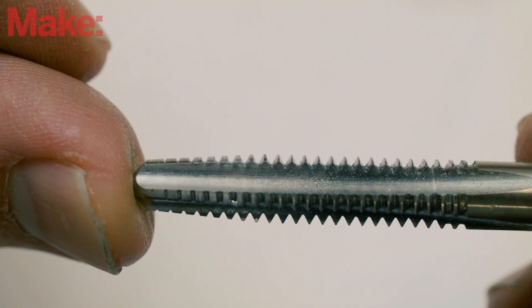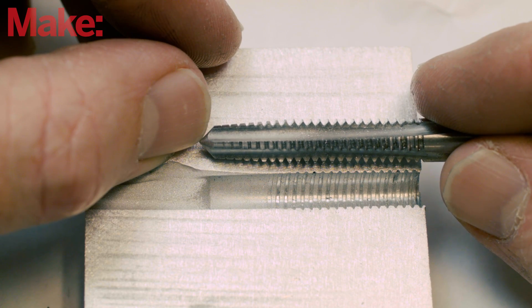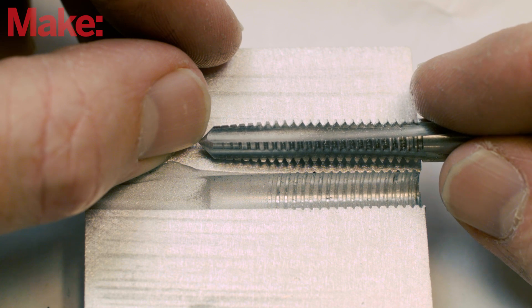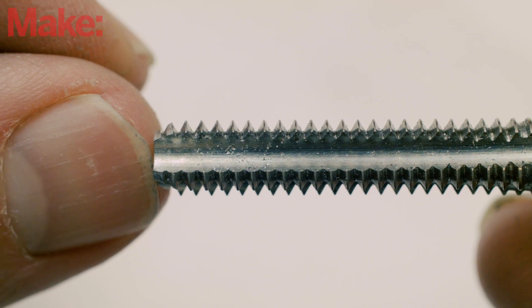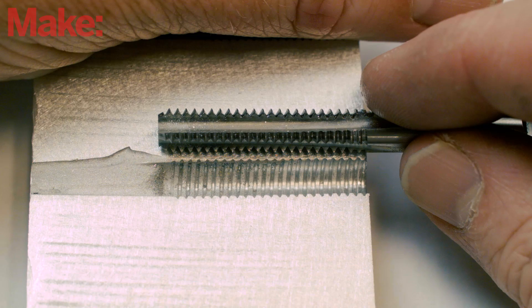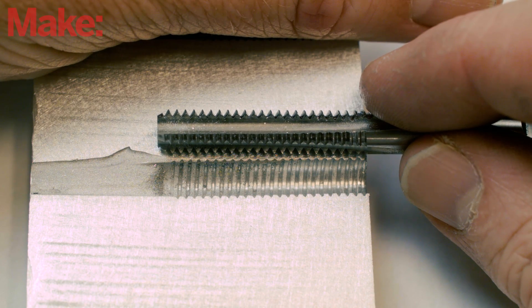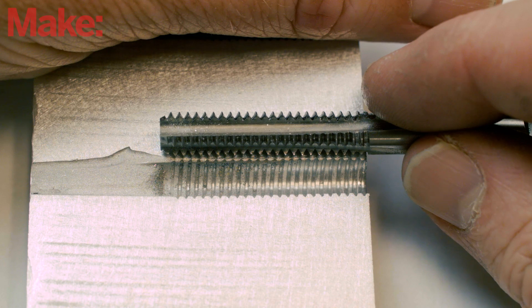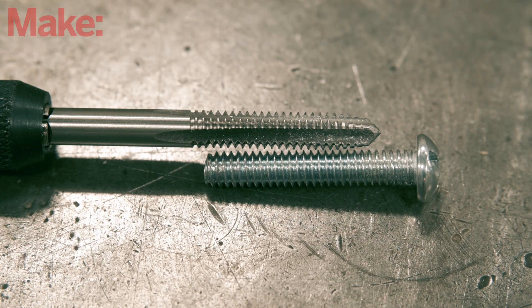Bottoming taps are for forming threads in the full length of a blind hole. It's recommended to use a taper or plug tap first to form the initial threads.